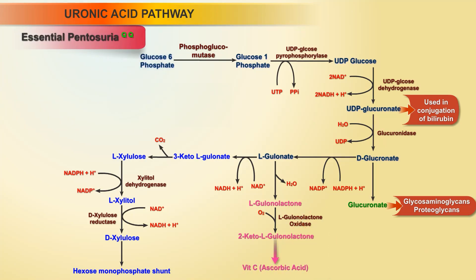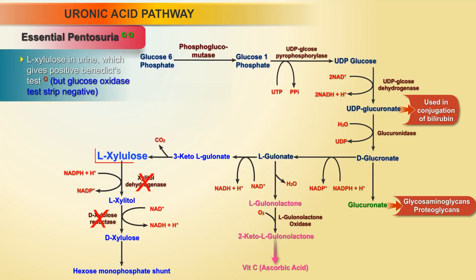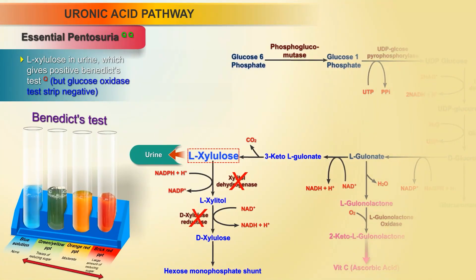Essential pentosuria. It is due to deficiency of xylitol dehydrogenase or reductase. It leads to L-xylulose in urine, which gives a positive Benedict's test but a negative glucose oxidase test strip.